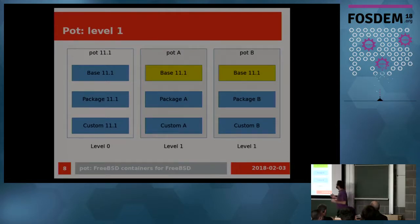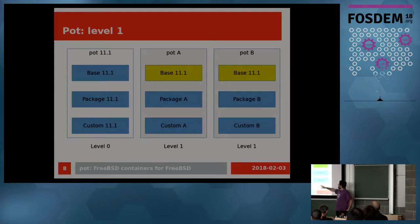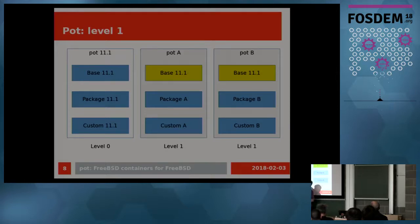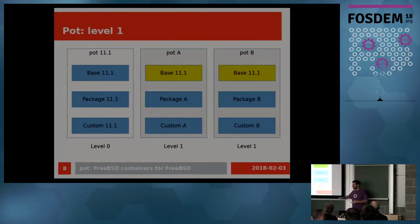When I create a pot, I need a base. Base 11 is the first thing you have to set up. Then you can create pot A — using that base. Every box you see is a ZFS dataset. When you create a new pot, it takes a base as a reference and uses the same base, mounted read-only, so it's not duplicated. It's exactly the same component, and you can create package and customization datasets on top. The point is to be able to completely reuse one dataset from one pot to another.